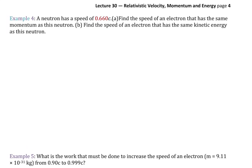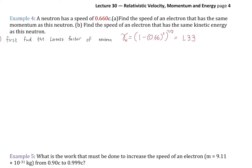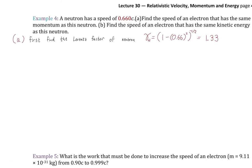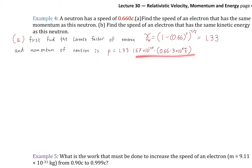Example 4: A neutron has a speed of 0.66C. We want to find the speed of an electron with the same momentum as that neutron, and the speed of an electron with the same kinetic energy as that neutron. First we find the Lorentz factor for 0.66C — it's 1.33. Using relativistic momentum gamma times MV with the neutron mass of 1.67 times 10 to the negative 27 kilograms, we get the neutron's momentum.